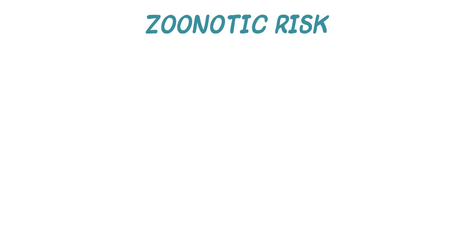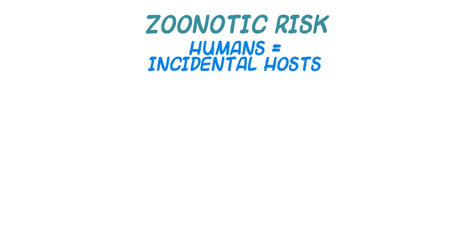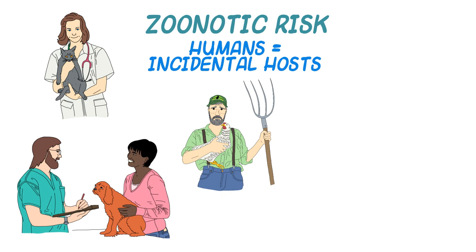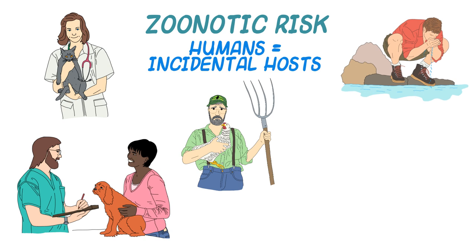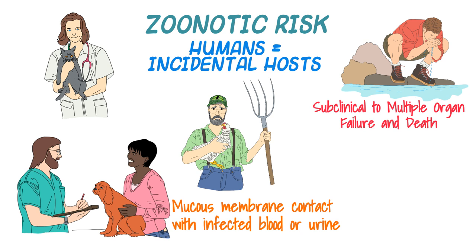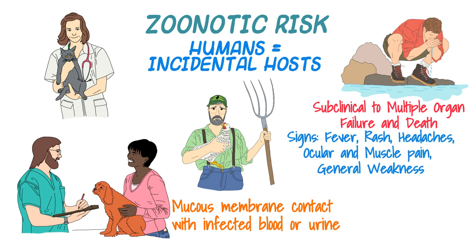People are susceptible to infection with pathogenic lepto species as incidental hosts. Those with exposure to livestock or infected pets, such as veterinarians, staff, and farm workers, are at greater risk. For the general public, exposure can come through recreational exposure to water contaminated by urine of domestic or wild animals. But an animal owner can also contract lepto from their pet or livestock through contact of mucous membranes with blood or urine from the infected animal. In human patients, just like other incidental hosts, the disease can range from subclinical to multiple organ failure and death. Reported signs include fever, rash, headaches, ocular and muscle pain, and general weakness. Exposure of pregnant and breastfeeding women are of additional concern because transplacental infection has led to abortion and breastfeeding has led to infection of the infant.